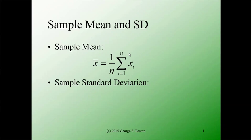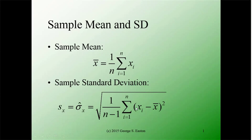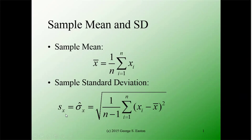The formula for the sample standard deviation works as follows: take every observation, subtract the sample mean, square that difference, and add up all those squared differences from the first observation through to n. Take that sum of squared deviations, divide by n minus 1, and then take the square root. The sample standard deviation is often denoted s or sigma-hat sub x.